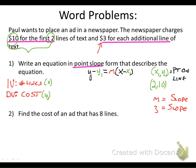If I just substitute these values into my equation, Y minus my Y value equals my slope times X minus my X value. Y minus 10 equals 3 times X minus 2, and that is your point-slope form of the line.